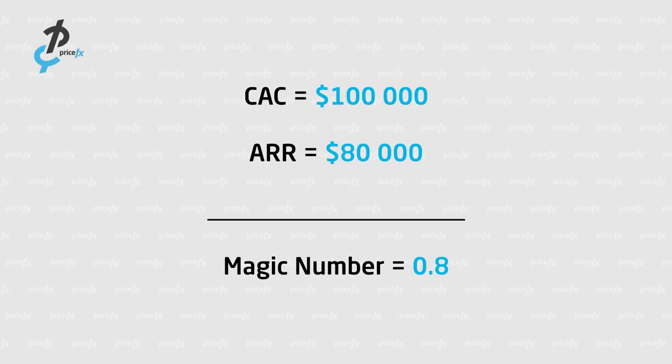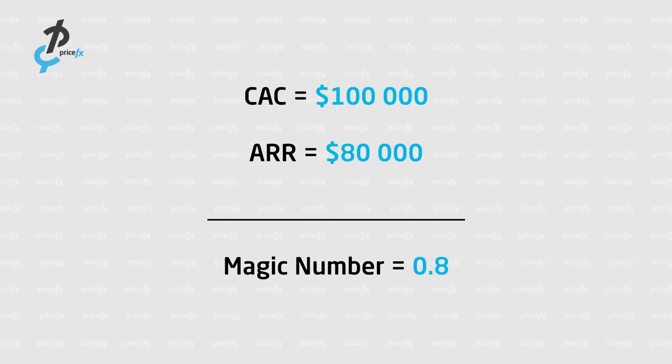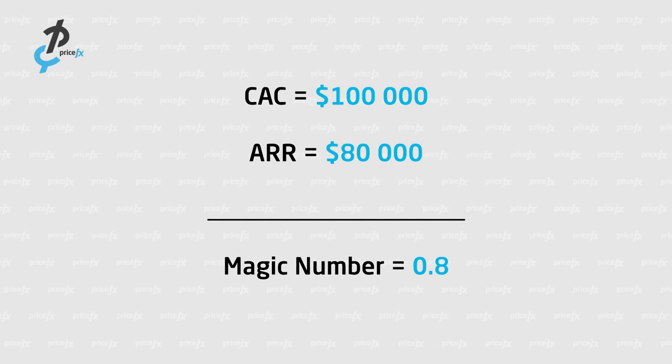For example, we invested $100,000 in customer acquisition costs but we only achieved $80,000 in new ARR. That means our magic number is 0.8 — for every dollar we invested, we only reaped 80 cents in reward. The idea is that we should achieve a magic number of at least one, and achieving three would be fantastic.